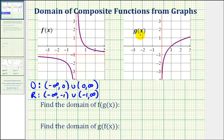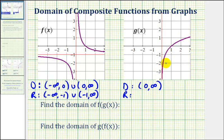For the function g of x, notice how the domain will always be when x is greater than zero, so we'll have the open interval from zero to infinity. For the range, notice how the graph goes up and down forever with no breaks — therefore the range is all real numbers, or from negative infinity to positive infinity.